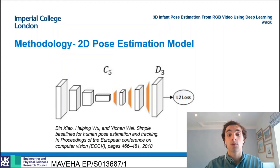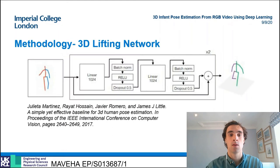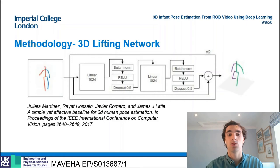The model was pre-trained on the MPII adult dataset before fine-tuning on the synthetic mini RGBD dataset. The final model in the pipeline is the 3D lifting network. This takes an input of 2D pixel locations and outputs the 3D locations of each key point relative to the pelvis joint. The lifting network is adapted from the work of Martinez et al.